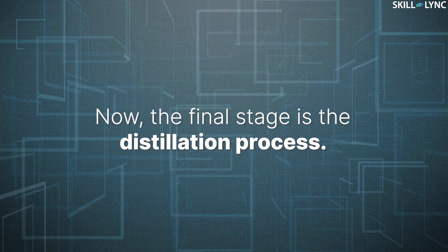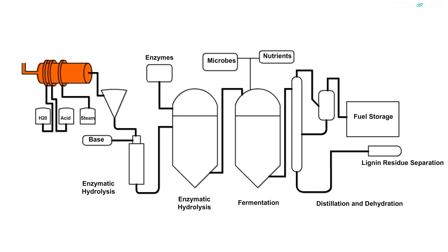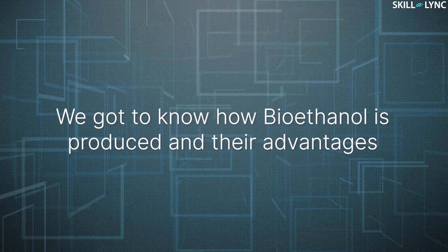The final stage is the distillation process. In this stage, water is removed from ethanol by the distillation process to be used as a fuel. The resulting ethanol is filtered and collected in a storage tank.